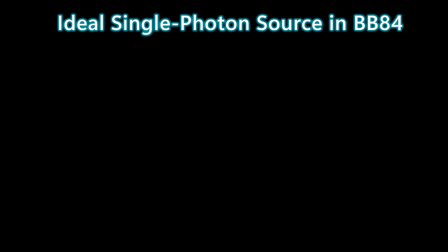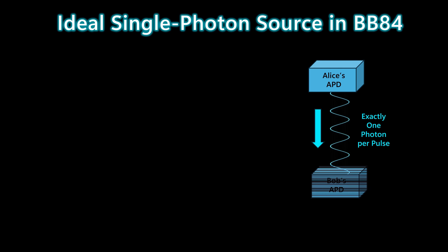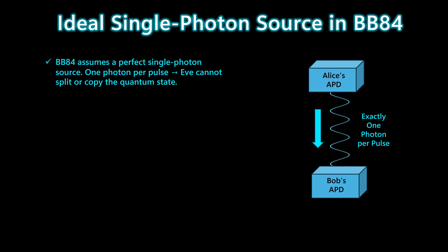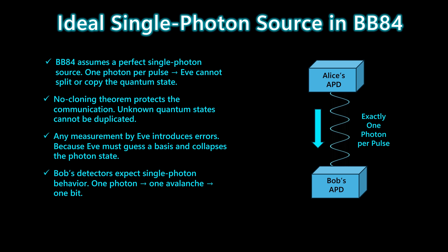In BB84, security relies on the assumption that Alice sends exactly one photon in every pulse. With a true single-photon source, Eve cannot split the state or make a copy of it. The no-cloning theorem guarantees that an unknown quantum state cannot be duplicated, so any attempt by Eve to measure the photon would collapse the state and introduce errors that Bob would detect. In the ideal model, one photon corresponds to one avalanche in Bob's detector, and any interference is immediately visible in the QBER.